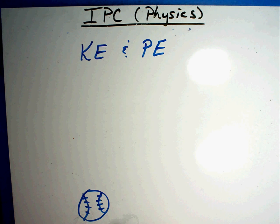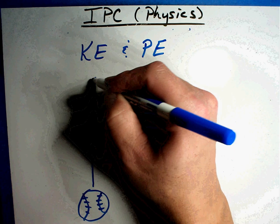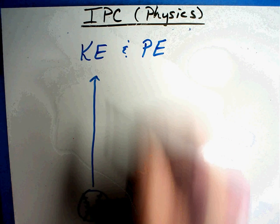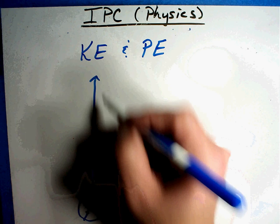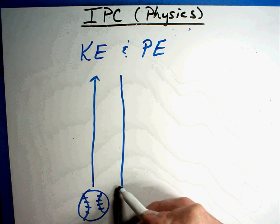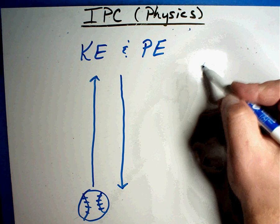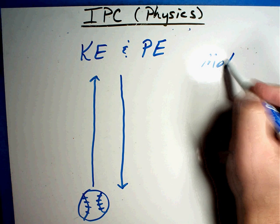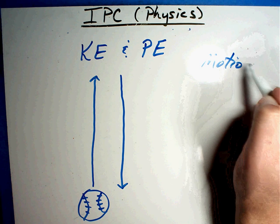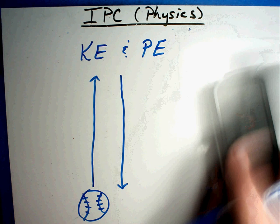If I take that baseball and throw it up in the air, it's going to go up and then come back down. There are a couple of things you need to know, and this is basically dealing with motion — how things move — so that if they ask you a question about motion, you've got it.